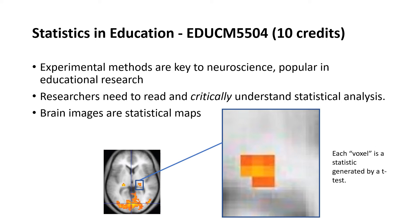In fact, when you look at brain images, every brain image is in fact a statistical map. Every one of those little squares that you see in that image is actually the result of a t-test — a statistical test that you'll come to understand the meaning of through this unit.